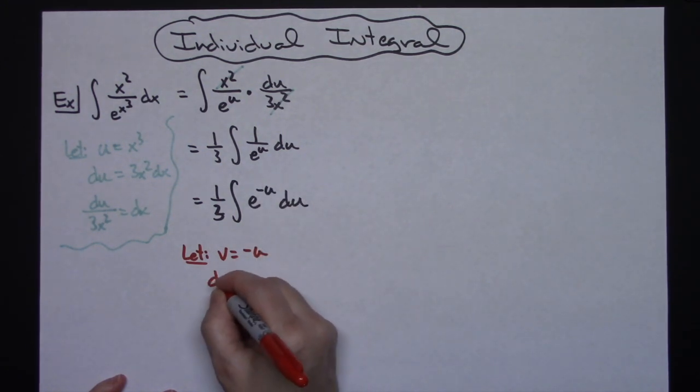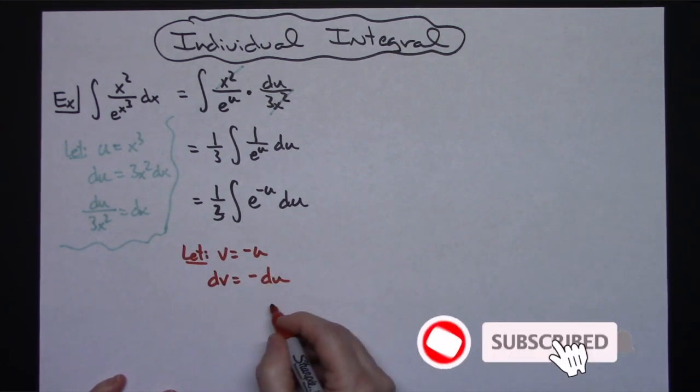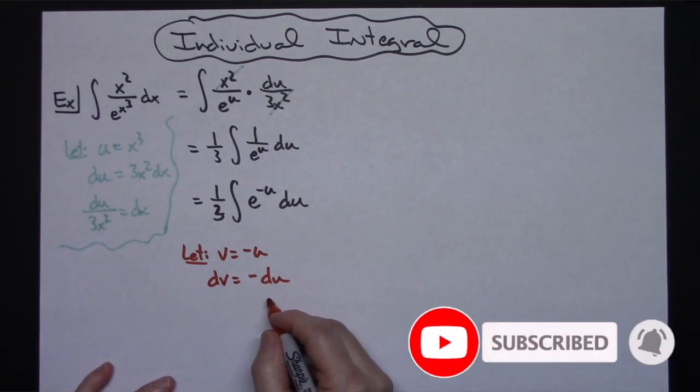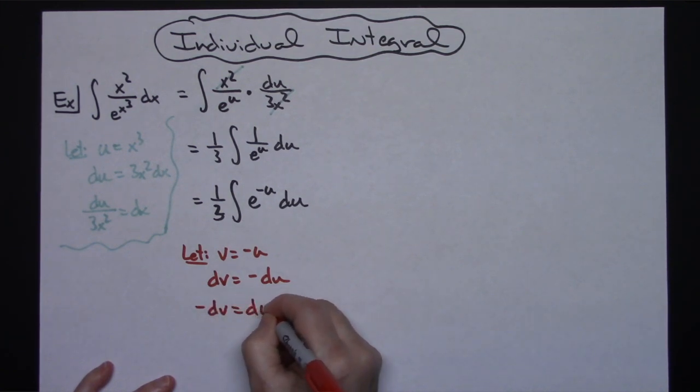I'm going to take the derivative of both sides. I'll have dv is equal to negative du, and going ahead and solving all the way down there for that du, negative dv is equal to du.